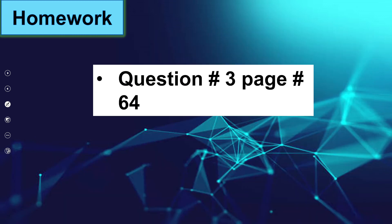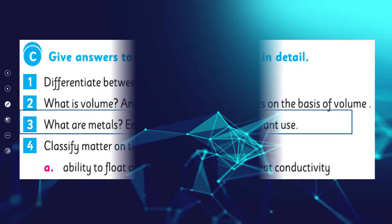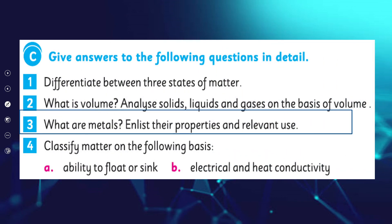For homework, you will do question number three on page 64: What are metals? List their properties and relevant uses — metals kya hote hain, inki kya properties hoti hain, aur in ko kis cheez ke liye istemal kiya jata hai. Complete this question in your notebooks.